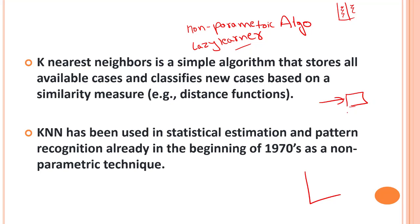So KNN is a lazy learner — when we pass in the training data it does not do anything. When some new data is given, then at that point it performs the classification task and places that new point into the most similar category. That was a brief overview of the KNN algorithm. In the next video, let's look into the algorithm and how it works.